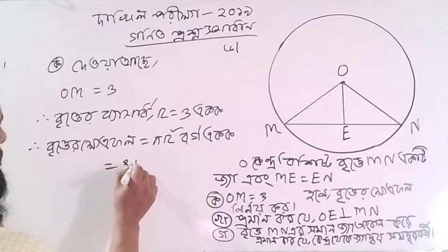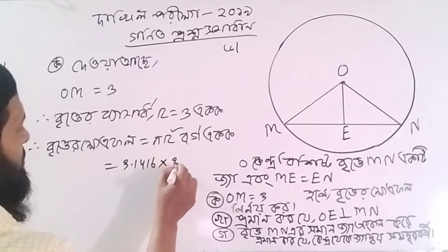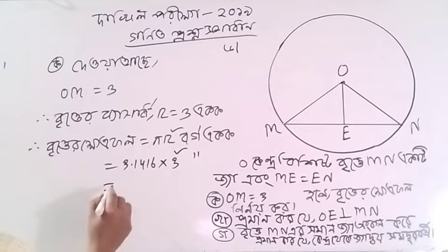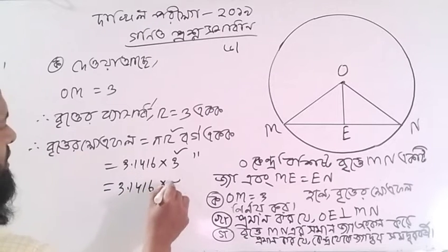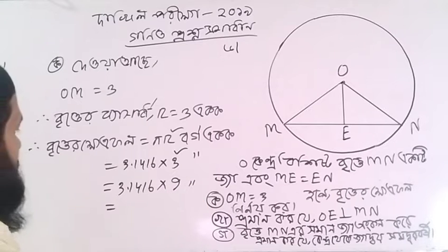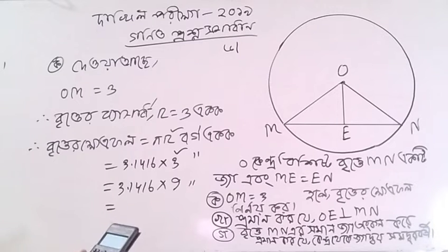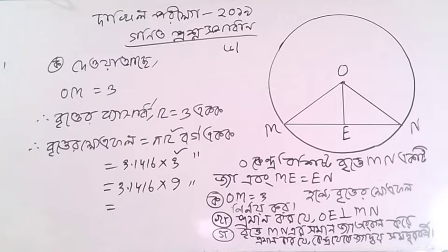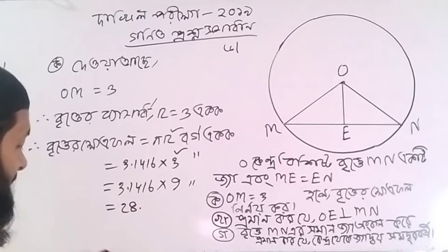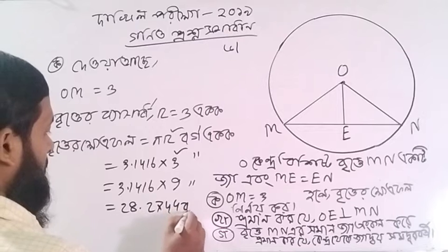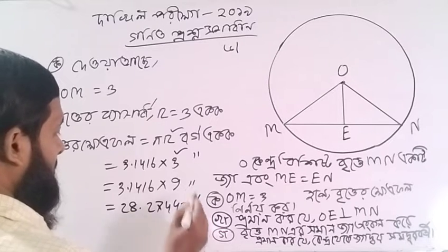So 3.1416 times 3 squared, just 5. So 3.1416 times 3 squared — 3.1416 times 3 squared equals 9. So 9 into 3.1416, 9 into 3.1416, equals 28.27. That gives us 28.2744.